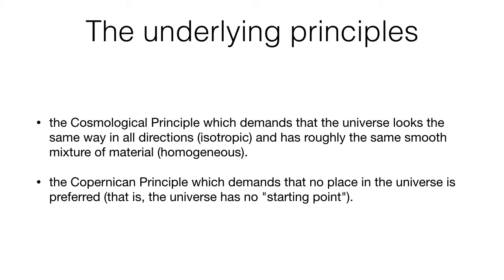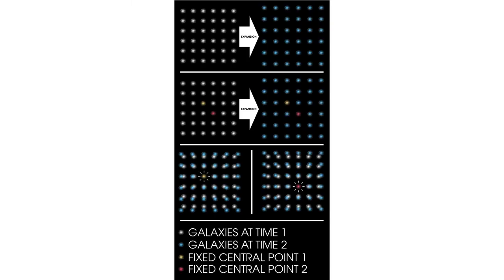The next part is the Copernican principle, meaning there is no central point in the universe. You can take any point as the starting point, or no point is the starting point. Just as Earth is not the center of the universe, the Sun is also not the center, and even our Milky Way is not the center. You can take any star as the center of the universe. As shown in this diagram — whether you take the yellow dot or the red dot, it will look the same.